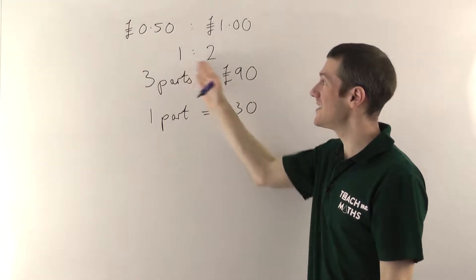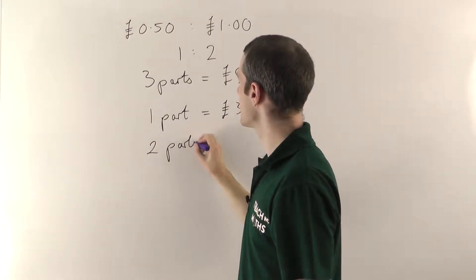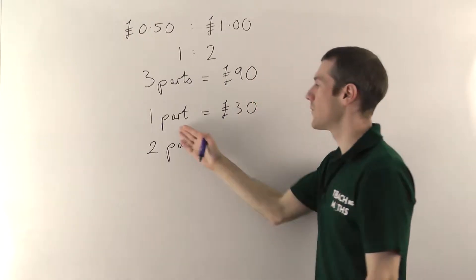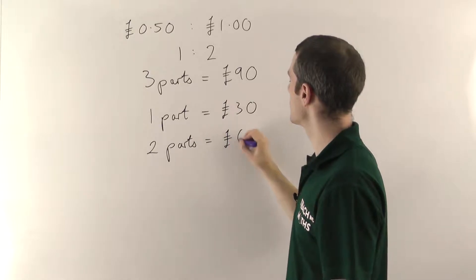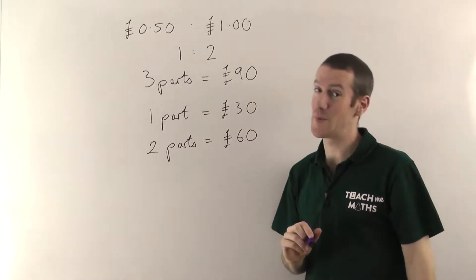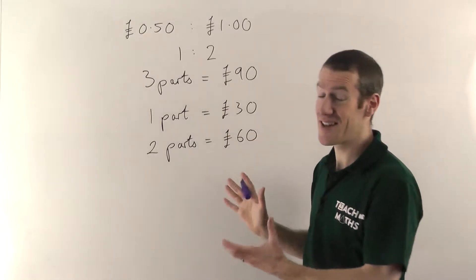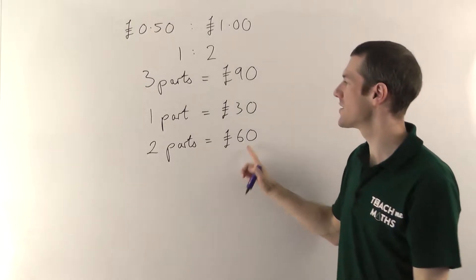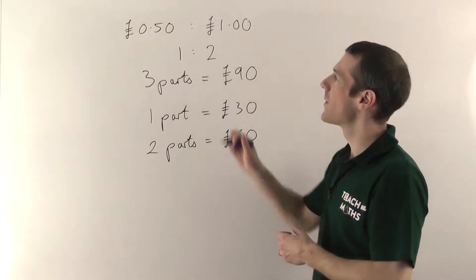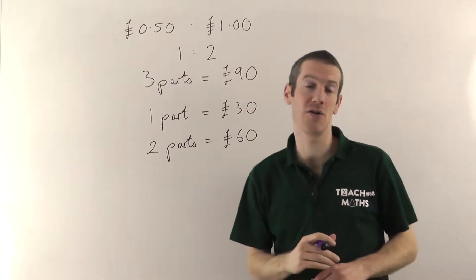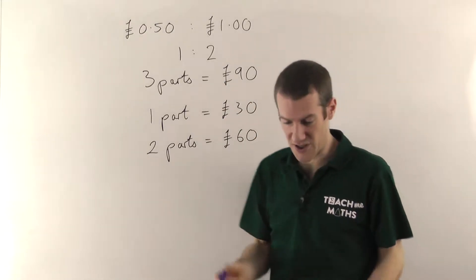Once you know what one part is, it's easy to find out any of the other parts. My friend is going to get two parts — if one part is 30 pounds, two parts is twice as much, so he will walk away with 60 pounds. Now this is how business works in the real world. There's a reason why he gets twice as much as I do — it might seem unfair, but you have to realise that with initial investment there's always a risk associated with it.